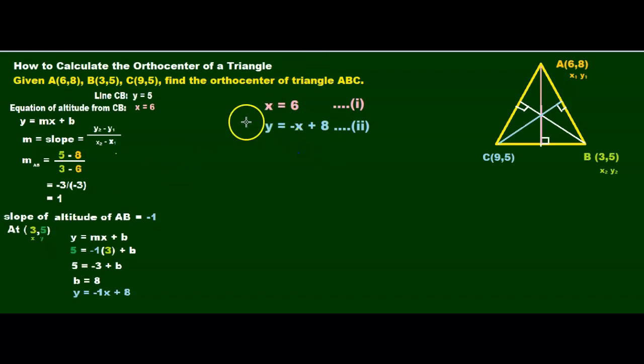We want to try to align our equal signs in the same column so we keep everything neat. Then I'm going to substitute because, remember, when I have something in the form of X equals something or Y equals something, it's better to substitute. I'm going to substitute equation 1 into equation 2. Therefore, Y equals negative 6 plus 8.